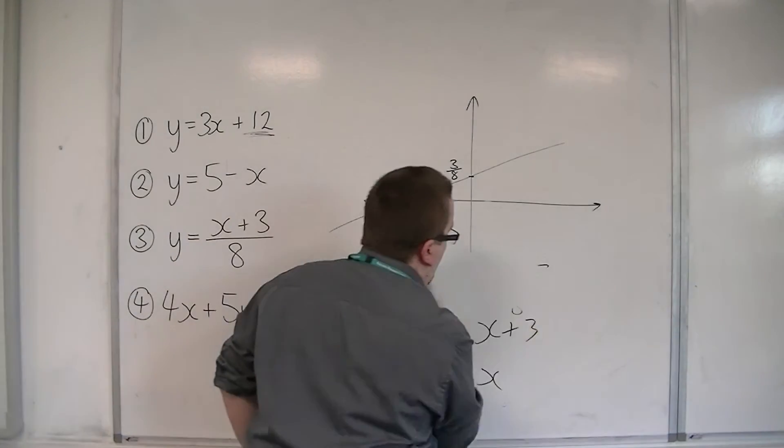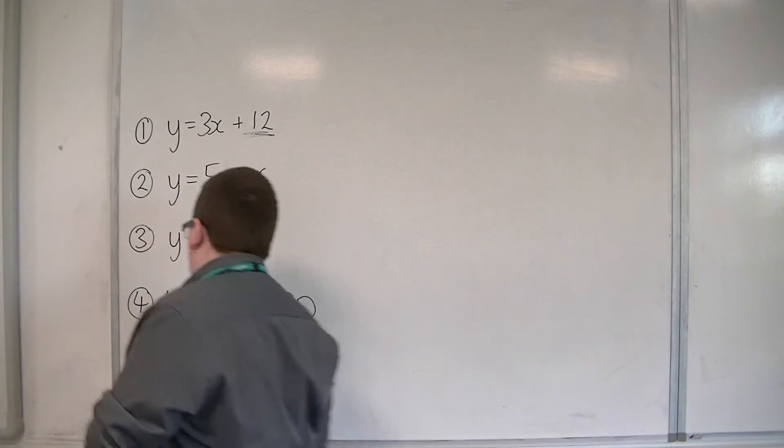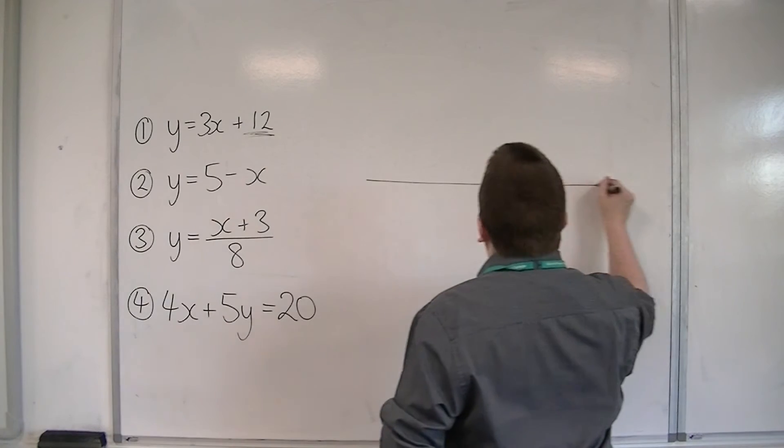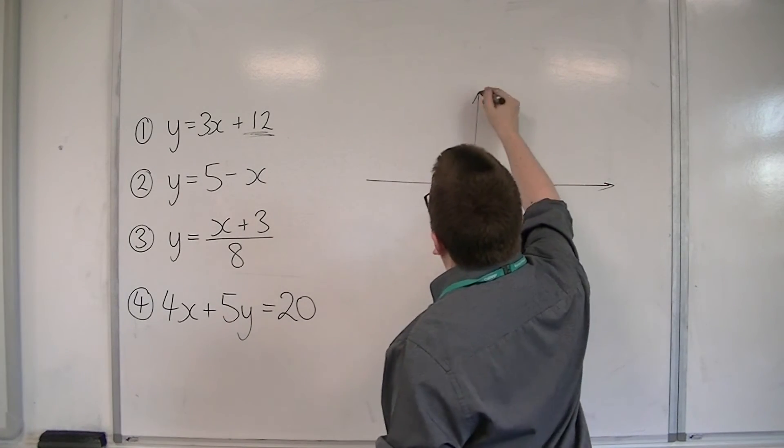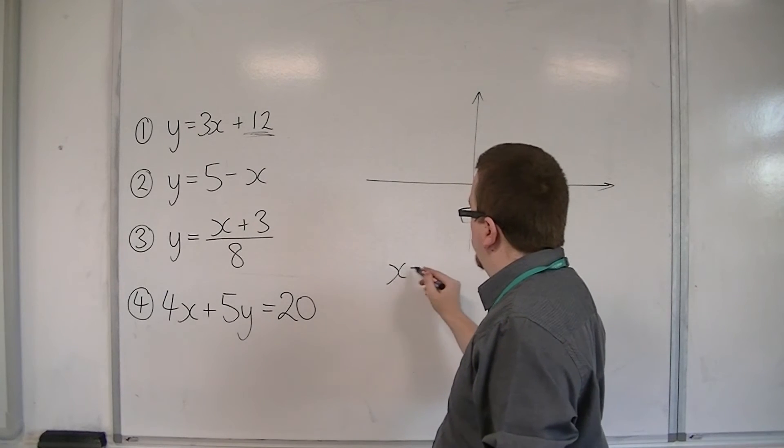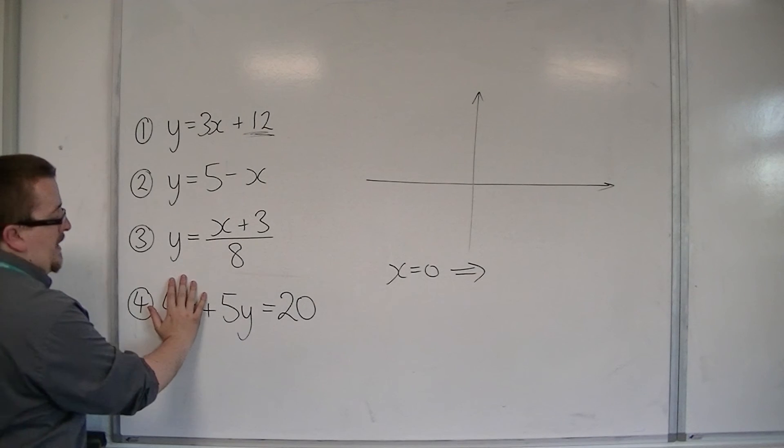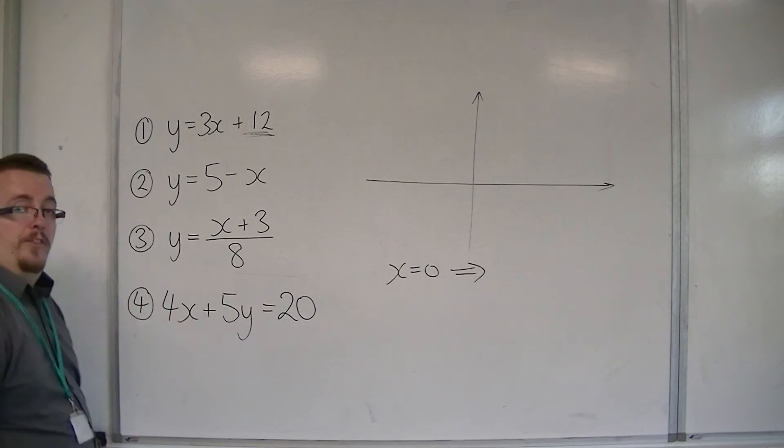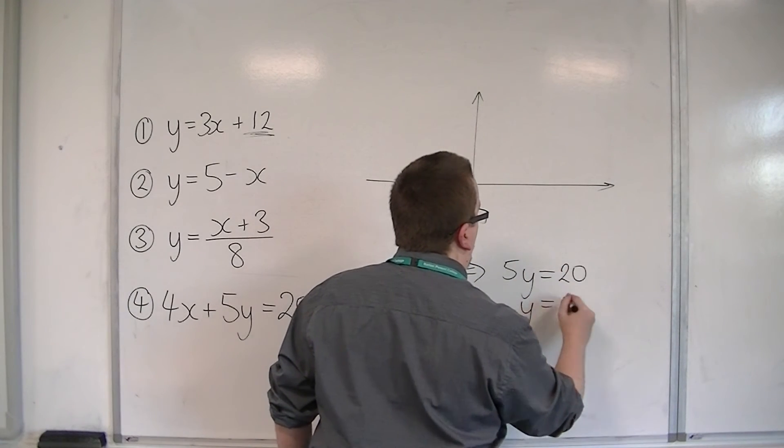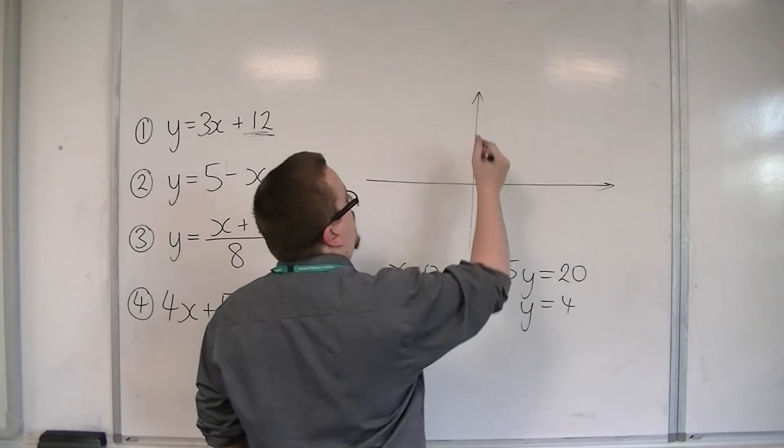So we're going to use a very similar technique for number 4. We can figure out where it crosses the x and y-axis by putting x and y equal to 0. So if we put x is equal to 0, then we can cover up the 4x, and we're left with 5y is equal to 20. So y is equal to 4. So 0, 4 is the coordinate on the line.